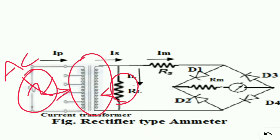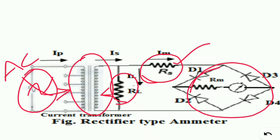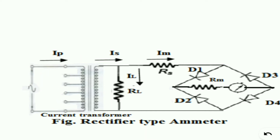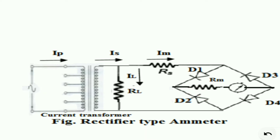Next we have RL, which is the load resistance. RS is the series resistance. This is the rectifier — a full wave rectifier with four diodes: D1, D2, D3, and D4. RM is the movement resistance. This is the PMMC instrument connected in the circuit.